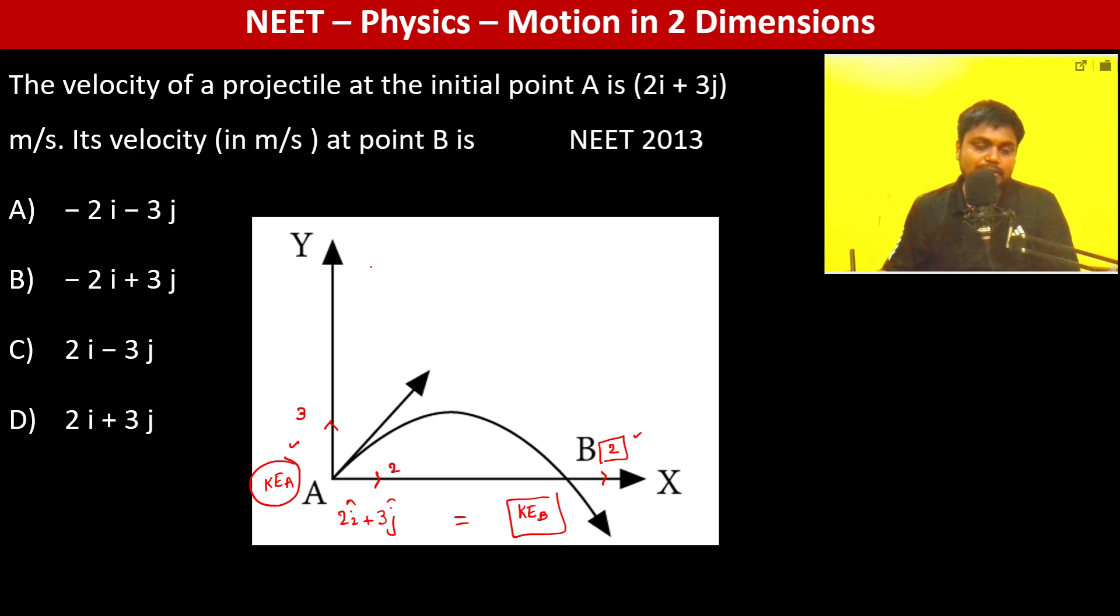So what is kinetic energy? Half into M into V, where V is root over Vx² plus Vy². So half into M (Vx² + Vy²) is going to be the kinetic energy. Now since Vx² is the same